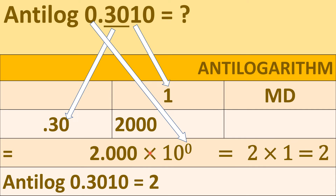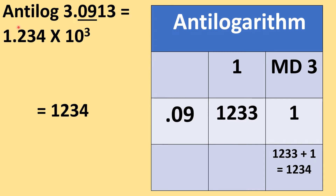After that, into 10 raised to the power of whatever the characteristic is — in this case 0. So 2.000 into 10 raised to the power 0 is nothing but 2 times 1, which is 2. Thus the value of anti-log 0.3010 is 2.